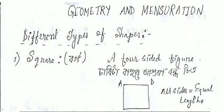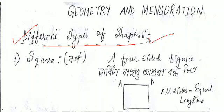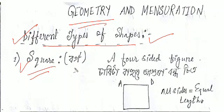So I am going to talk about different types of shapes. First we have the square. So what is the square? The square is a four-sided figure.